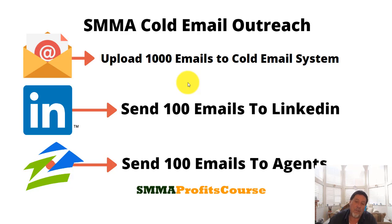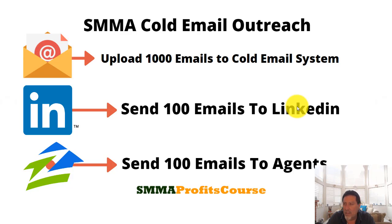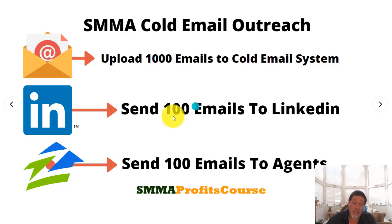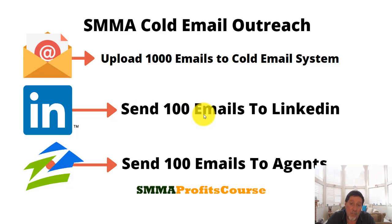So here's what we do — 1,000 emails, you upload those to your cold email system. Options include Woodpecker, Mailshake, and a few others — there are three or four main ones people are actually using. Just pick one, get good at it, and learn the interface. We run over 20,000 emails sending out on autopilot — everything's automated with our cold outreach system.